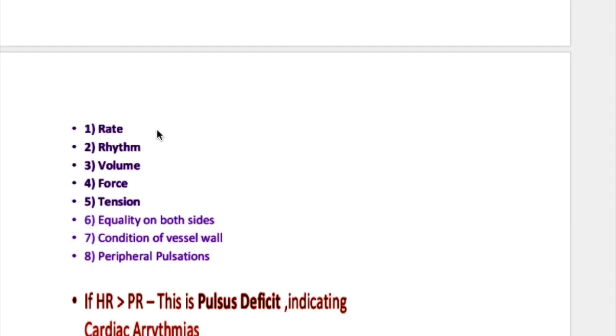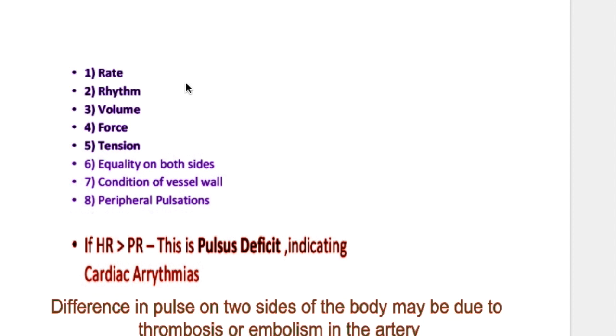What are the features seen in a peripheral pulse? Rate, rhythm, volume, force, tension, equality on both sides, and the condition of the vessel wall.